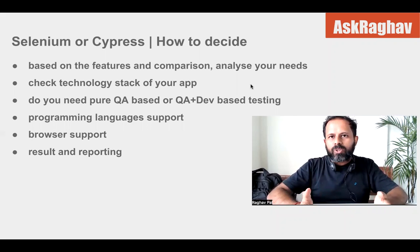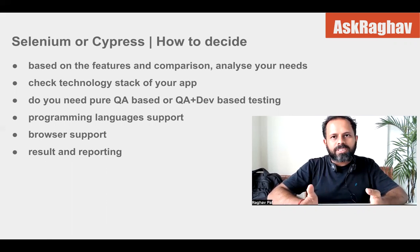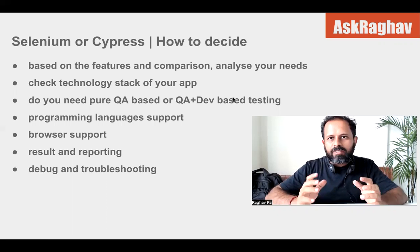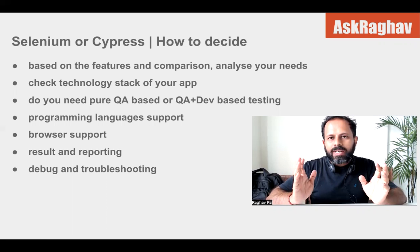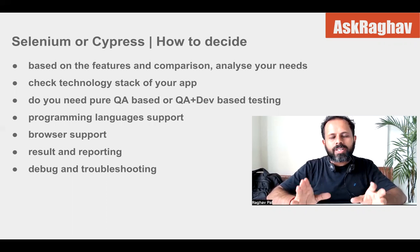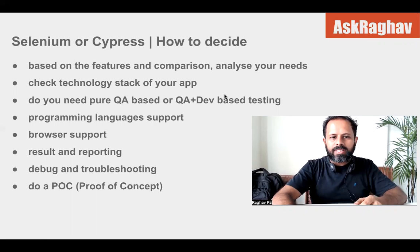For results and reporting, you can review the reporting libraries available for both Selenium and Cypress and decide based on your needs. For debugging and troubleshooting, Cypress is very easy — you get a command log during execution with a screenshot at each step taken by default, without adding extra commands. In Selenium as well, there are debugging and troubleshooting options, so you can decide on that basis.